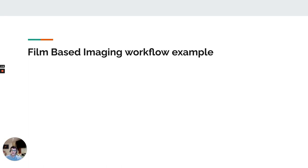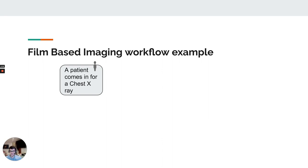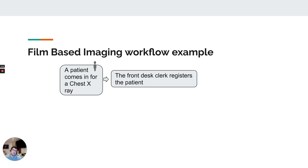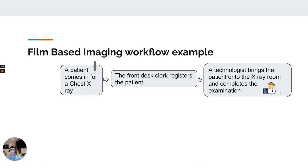This is the film-based workflow — how things used to be before everything was digitized. You'll see stark similarities to the digital workflow, but also some differences. A patient comes in for a chest X-ray with a requisition, walks into the hospital, and talks to the front desk clerk who registers them. Once registered, they go to the waiting room, the technologist comes out, calls their name, brings them into the X-ray room, confirms their identity, and takes the pictures.